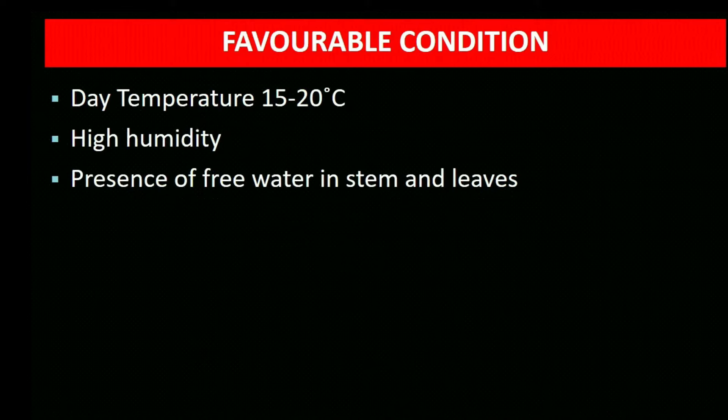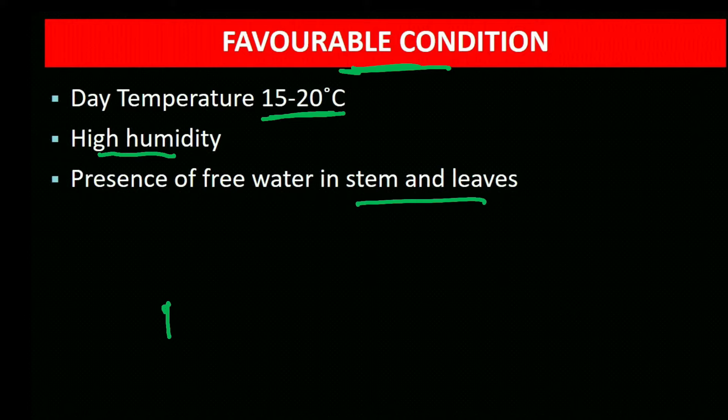Favorable conditions for brown rust: temperature 15–20°C, high relative humidity, presence of free water on stems and leaves, and high dose of nitrogenous fertilizer — all these favor disease development.